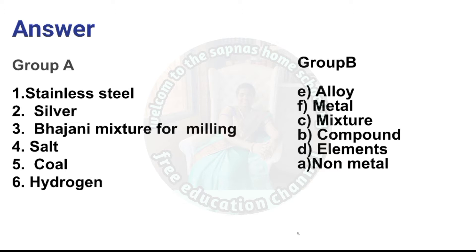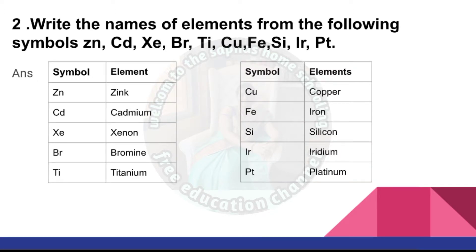Identify the element from the following symbols: Zn, Cd, Xe, Br, Ti, Cu, Fe, Si, Ir, Pt. Zn is for zinc, Cd for cadmium, Xe for xenon, Br for bromine, Ti for titanium, Cu for copper, Fe for iron, Si for silicon, Ir for iridium, and Pt for platinum. The chart is now complete.